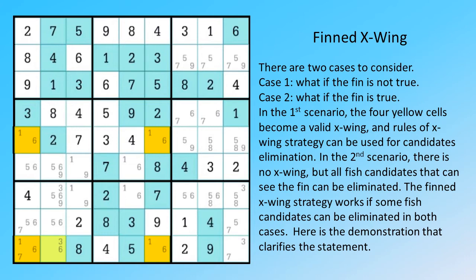In the second scenario, there is no X-Wing, but all fish candidates that can see the fin can be eliminated. The finned X-Wing strategy works if some fish candidates can be eliminated in both cases. Here is the demonstration that clarifies the statement.